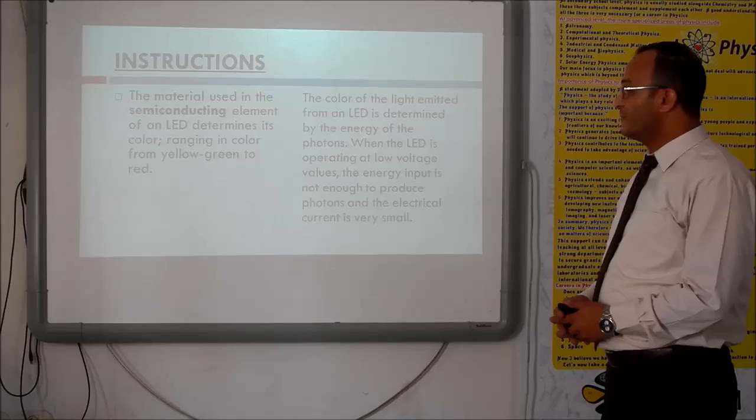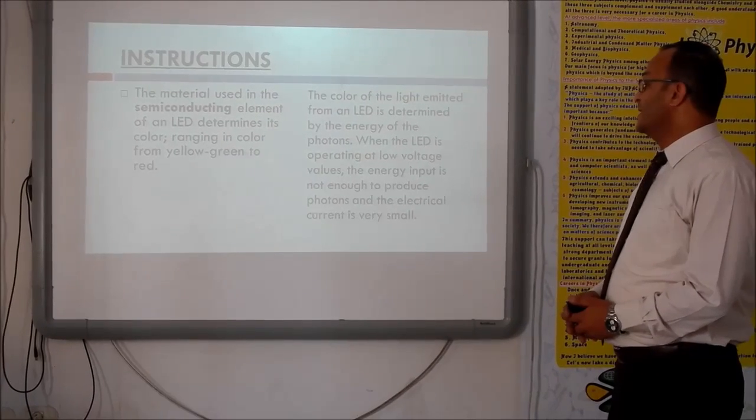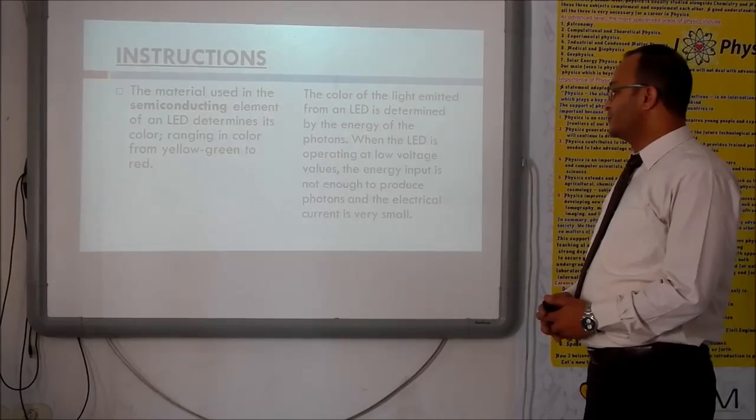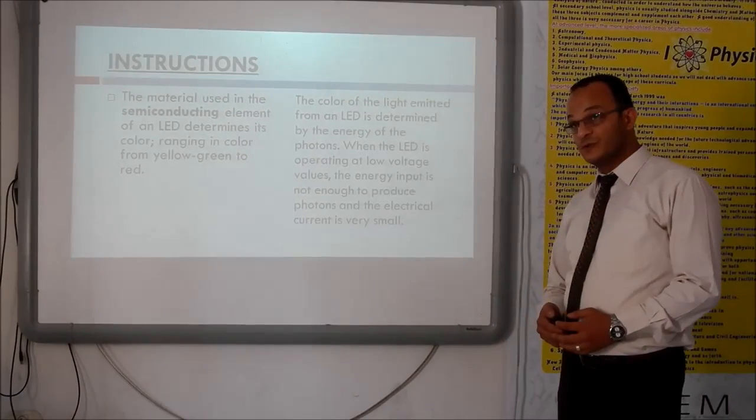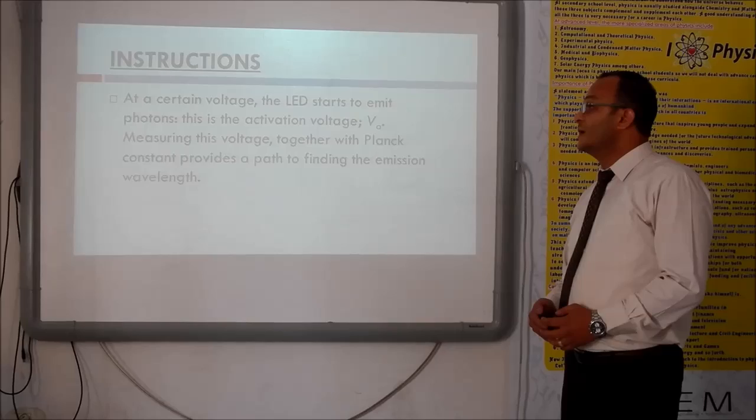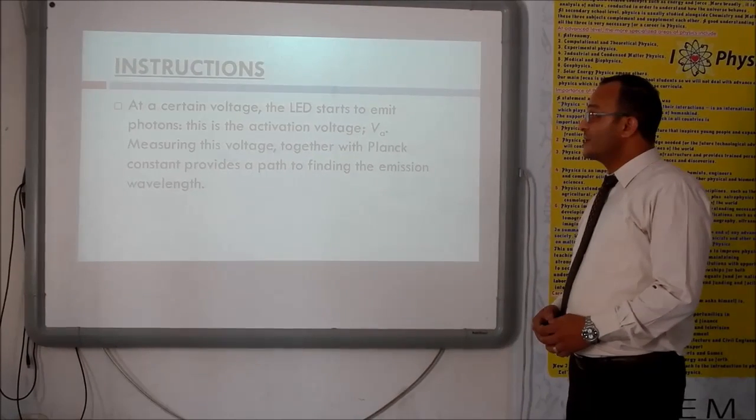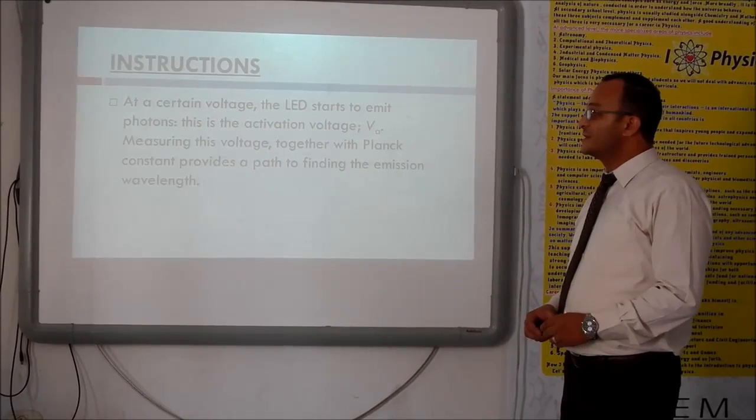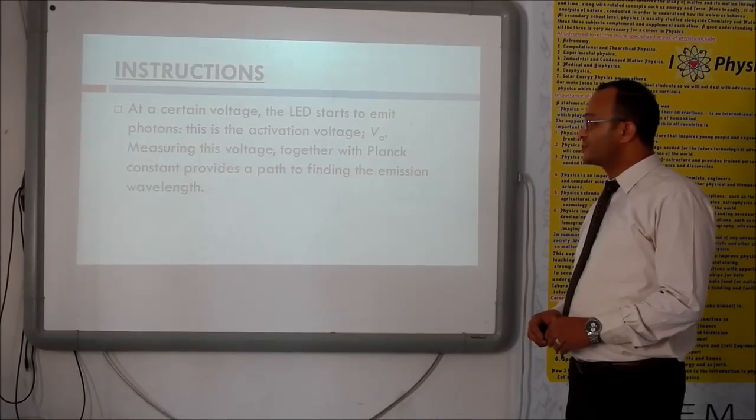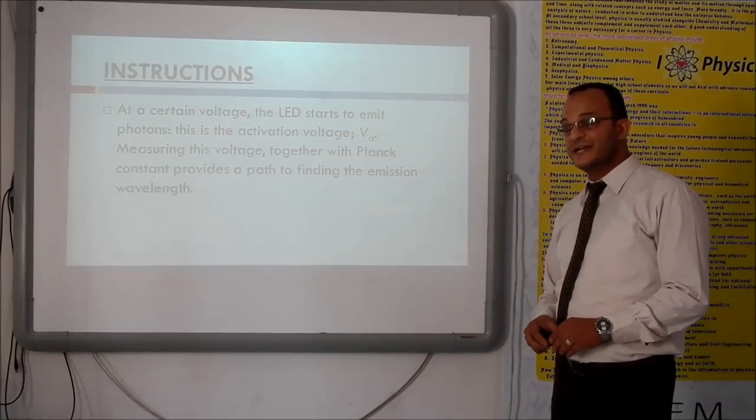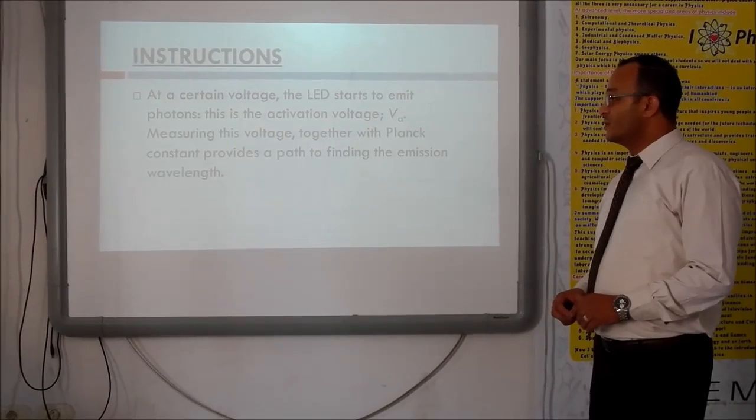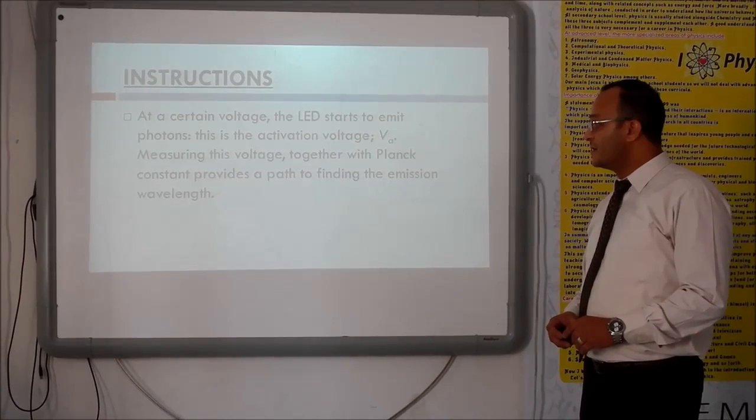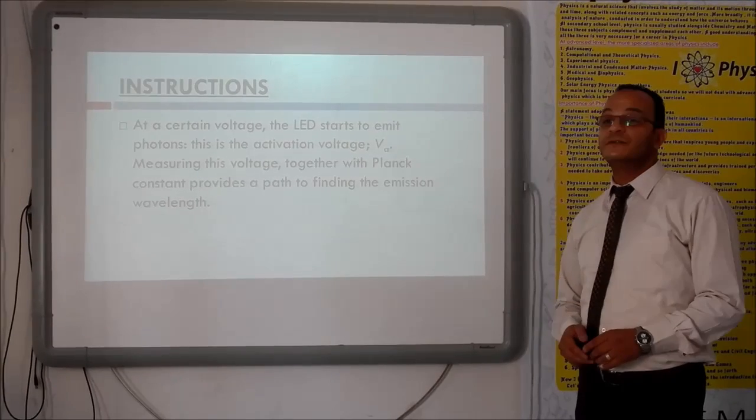When the LED is operating at low voltage values, the energy input is not enough to produce photons and the electrical current is very small. At a certain voltage, the LED starts to emit photons. This is the activation voltage which will be symbolized as VA. Measuring this voltage together with Planck's constant provides a path to finding the emission wavelength.